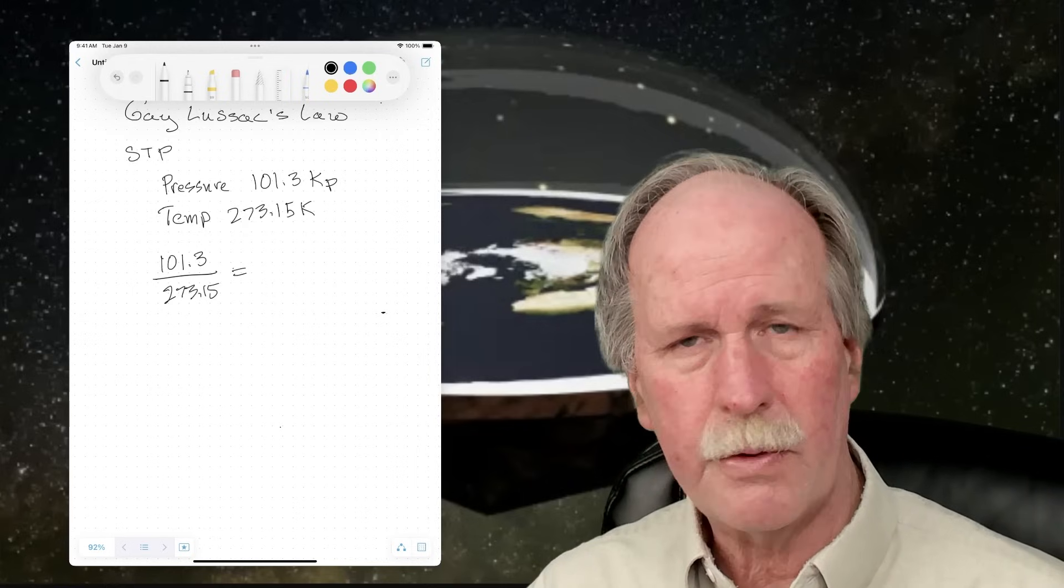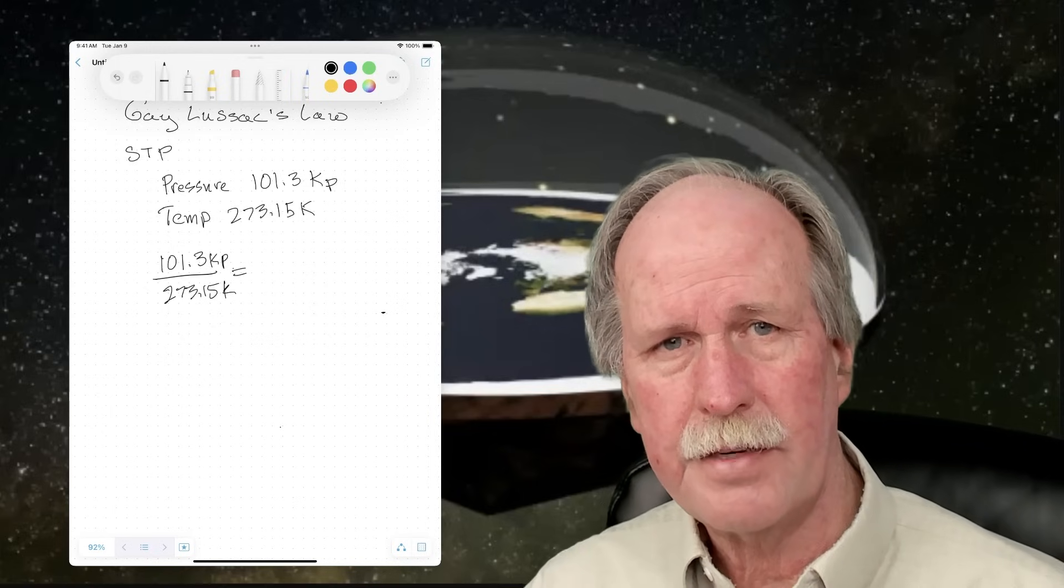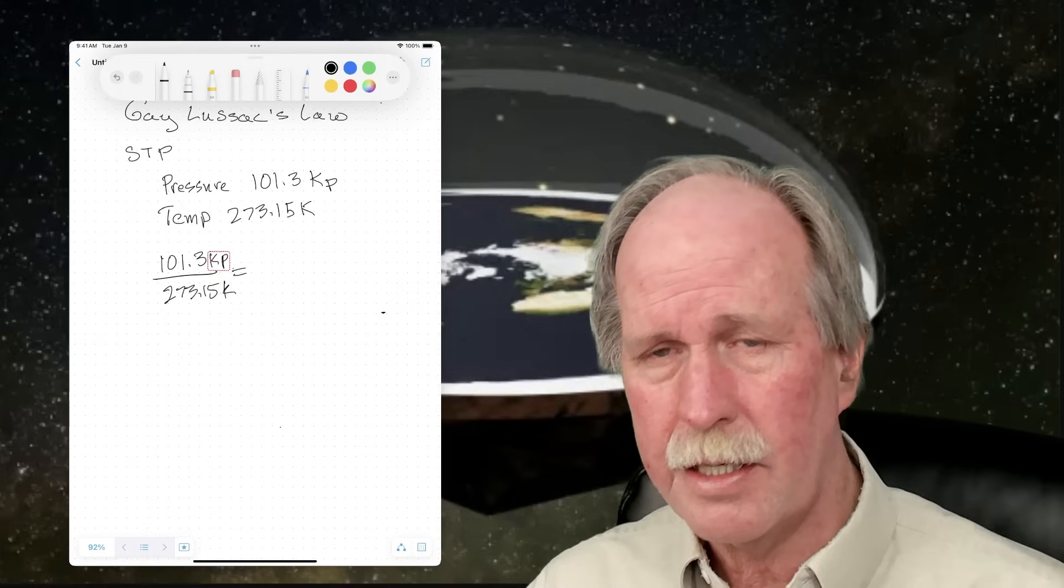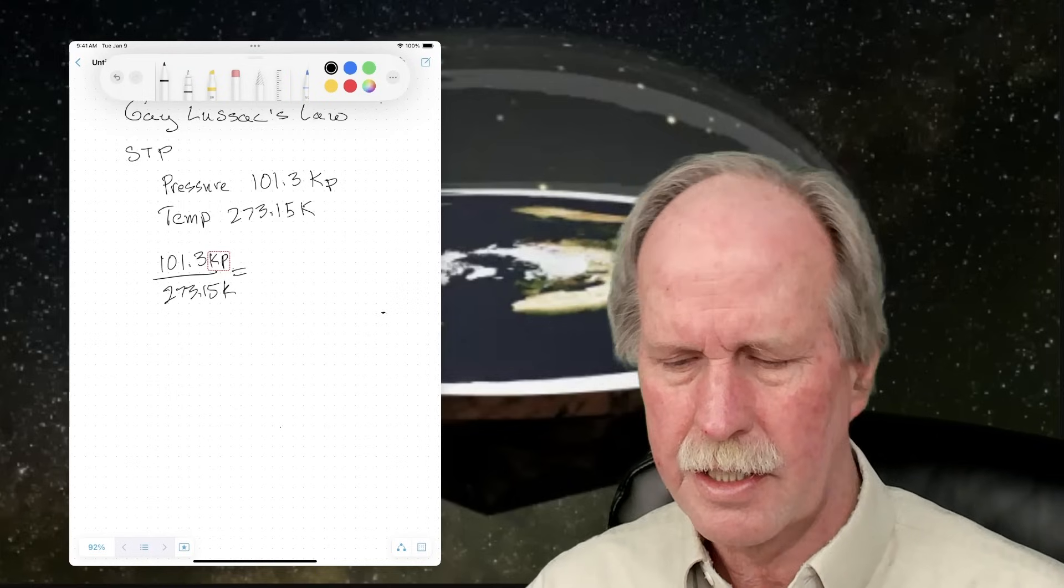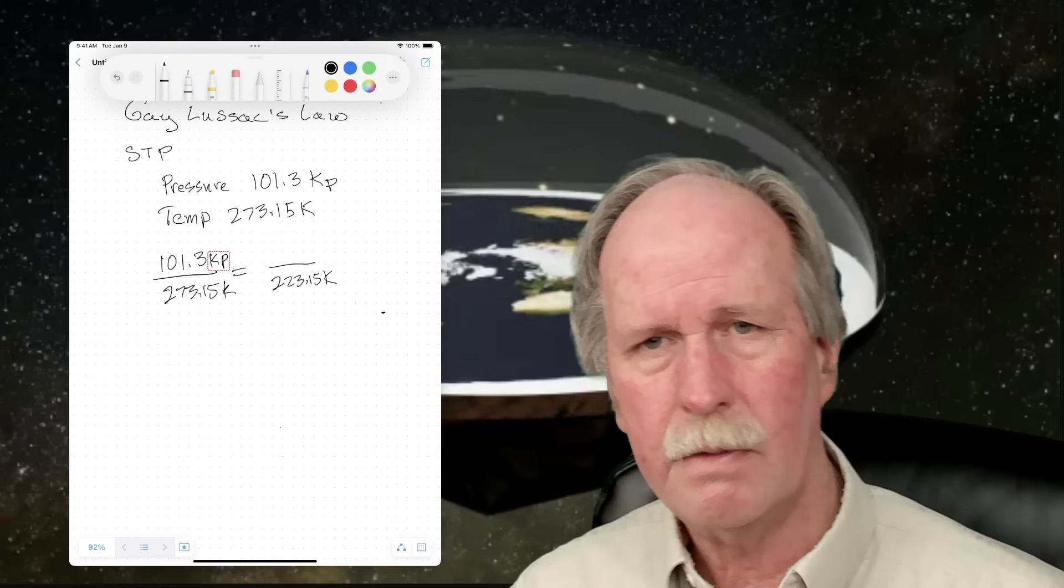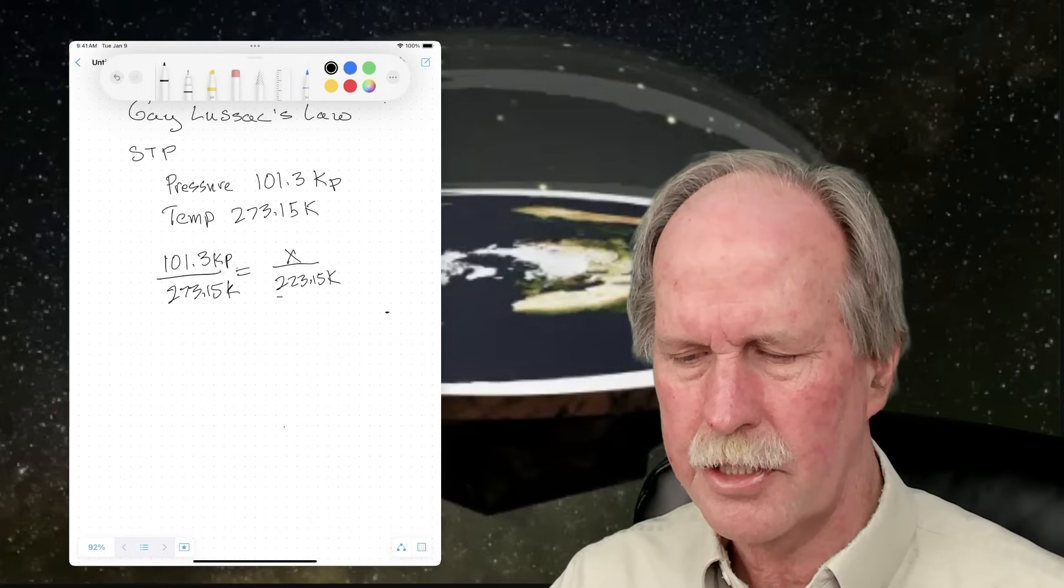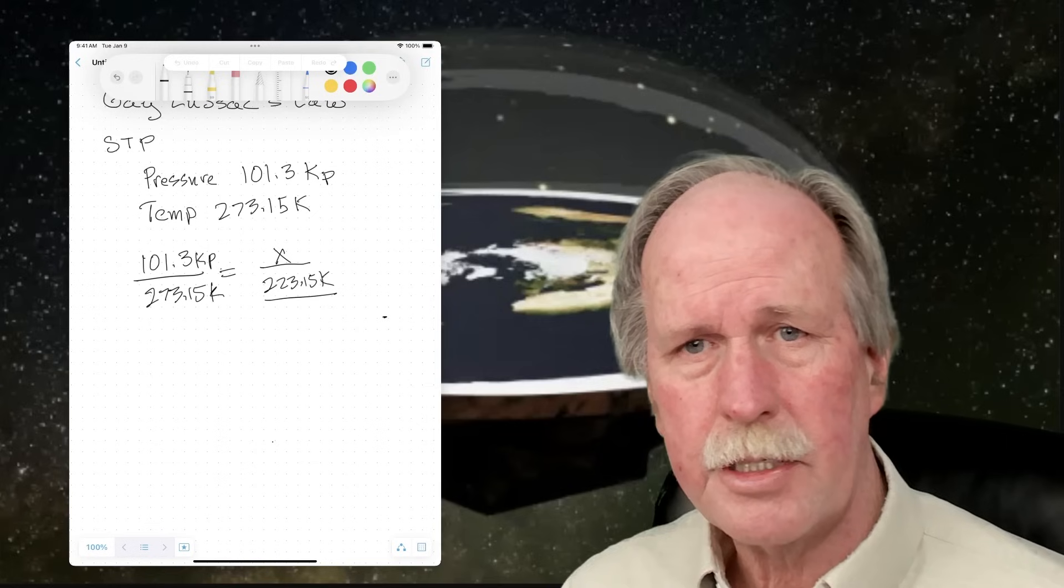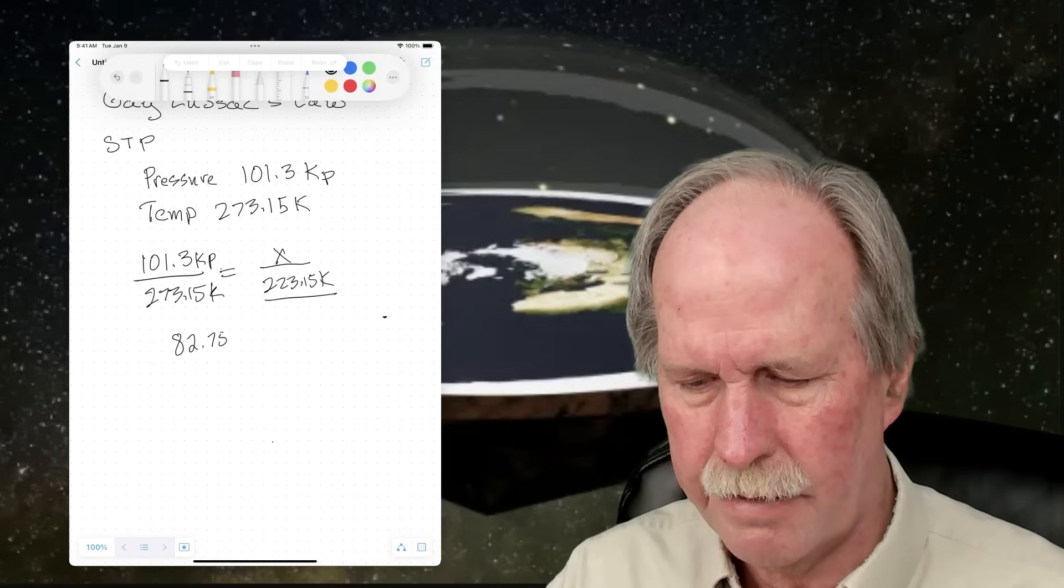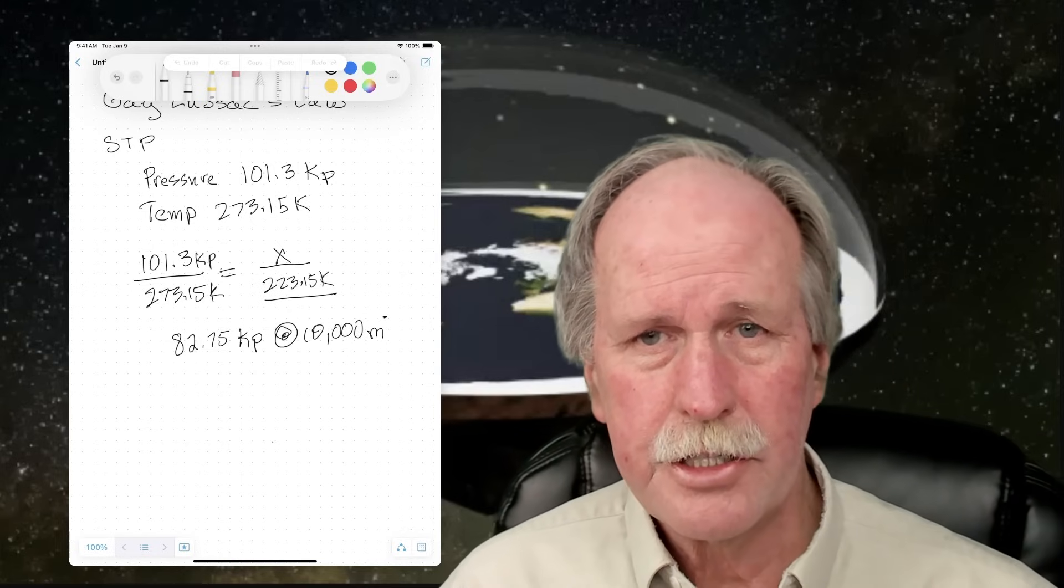So we should be able to set up this equation using the Gay-Lussac's law. And that is 101.3, which is the pressure in kilopascals, over 273.15 Kelvin. Now given the fact that the temperature at 10,000 meters is 50 degrees below zero Celsius, that means that the temperature there is going to be 223.15 Kelvin, roughly. And we should be able to solve here for x. What we do is we just multiply both sides by this number right here, and I'll do that real quick. So while you're welcome to do the math, I went ahead and did it for you, and the pressure should be 82.75 kilopascals at 10,000 meters.